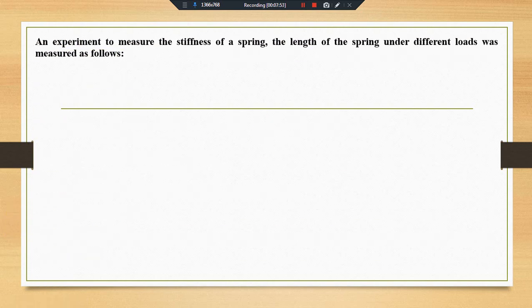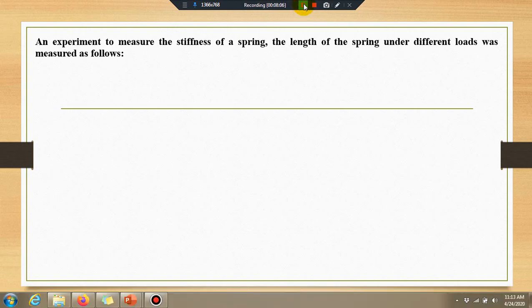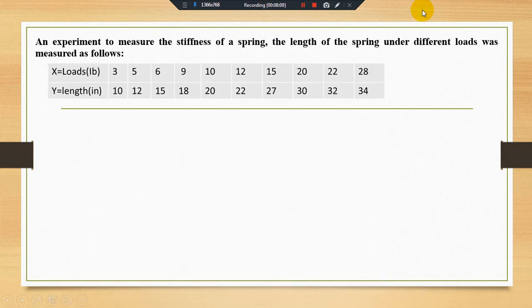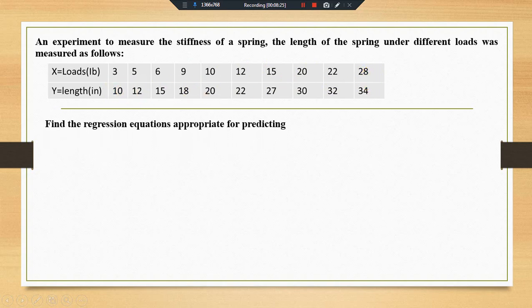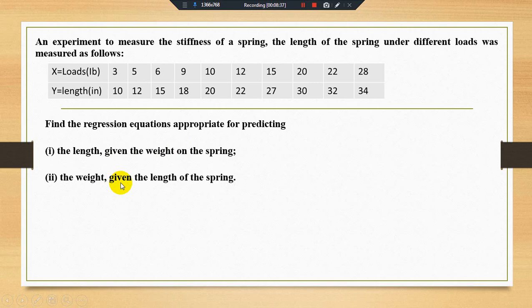We have another example. An experiment to measure the stiffness of a spring: the length of a spring under different loads was measured. We have two variables x and y. The x series is: 3, 5, 6, 9, 10, 12, 15, 20, 22, 28, and the y series is given. We need to find the regression equation appropriate for predicting the length given the weight of a spring, and also the weight given the length of a spring.